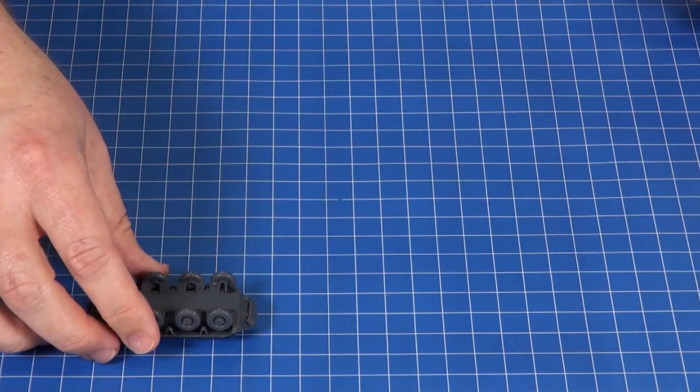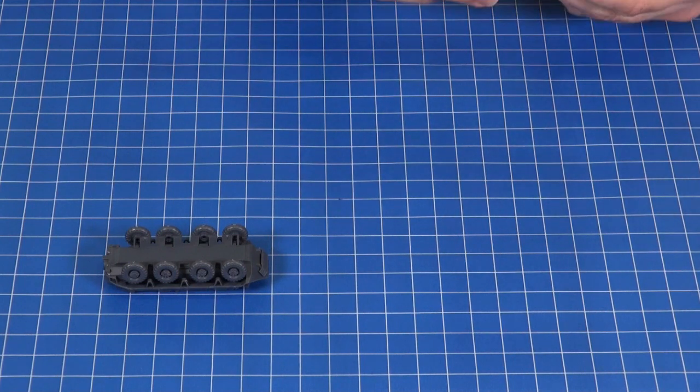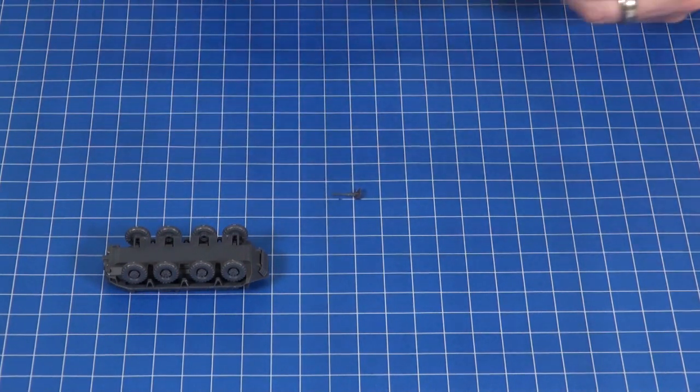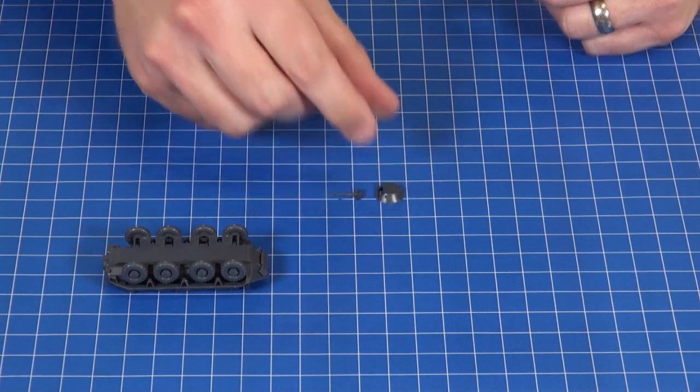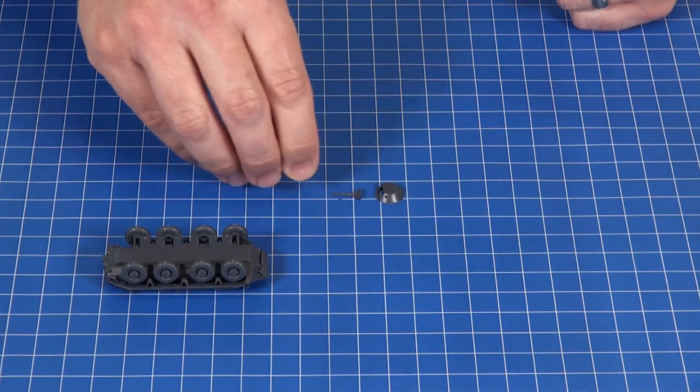With the hull complete we'll turn our attention to the turret. The turret is a total of three pieces. You've got the gun, the turret, and then the peg.